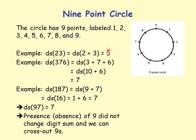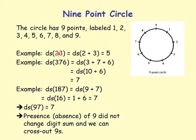Note that a digit sum like 5 doesn't tell us which digits were added — it only tells us the digit sum is 5. It could have come from 2 plus 3, or 1 plus 2 plus 2, etc. So the mapping is only one way: digit sum maps 23 into 5, but I cannot get 23 back from 5.